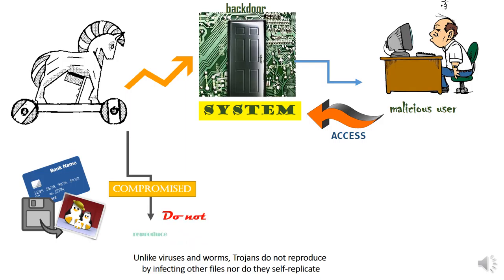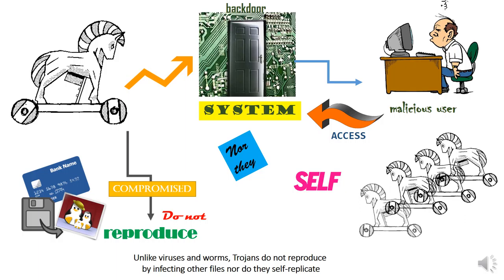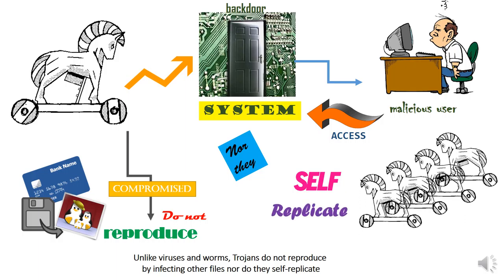Unlike varices and worms, children do not reproduce by infecting other files, nor do they self-replicate.